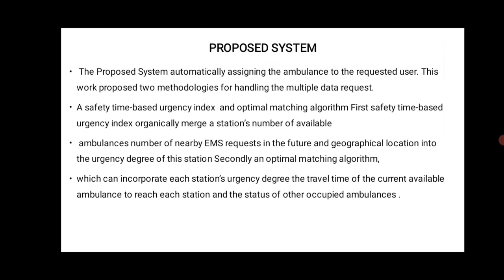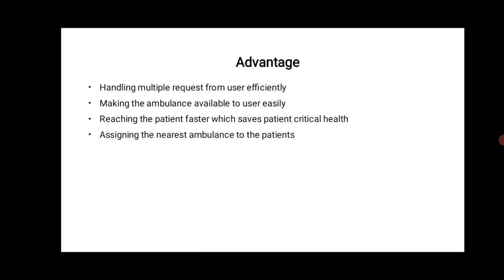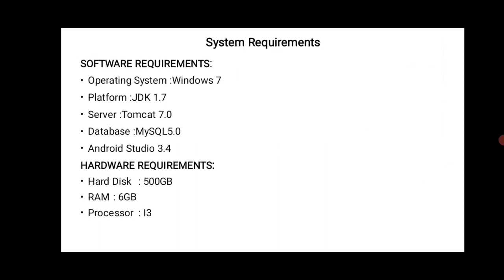The advantages of the proposed project are: handling multiple requests from users efficiently, making the ambulance available to users easily, reaching the patient faster to save critical health, and assigning the nearest ambulance to patients. The software requirements are: operating system Windows 7, platform JDK 1.7, server Tomcat 7.0, database MySQL 5.0, Android Studio 3.4. Hardware requirements are: hard disk 500 GB, RAM 6 GB, processor i3.